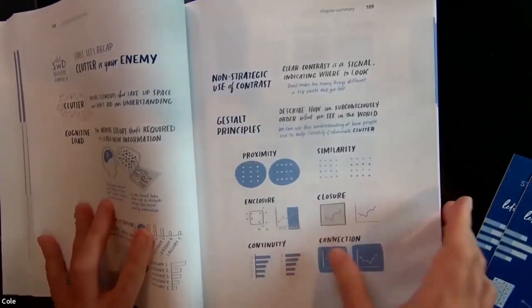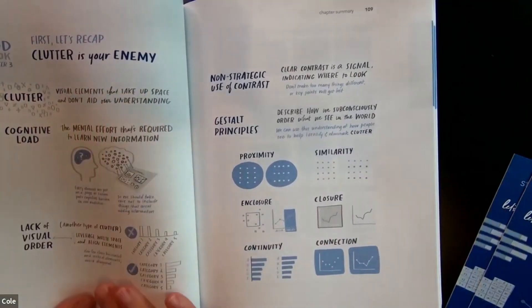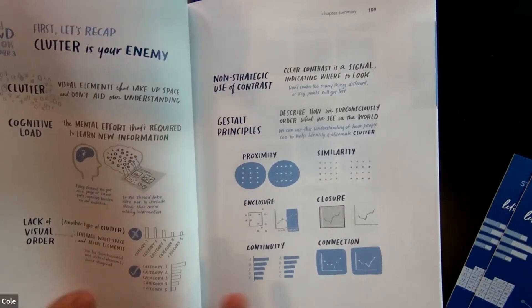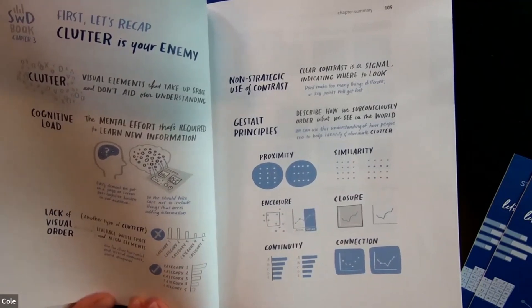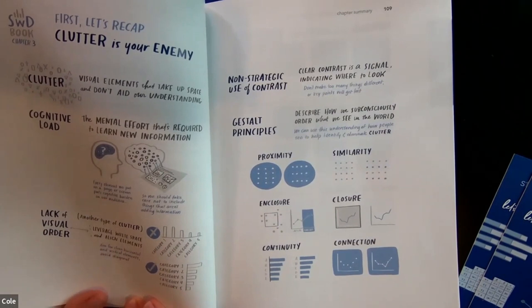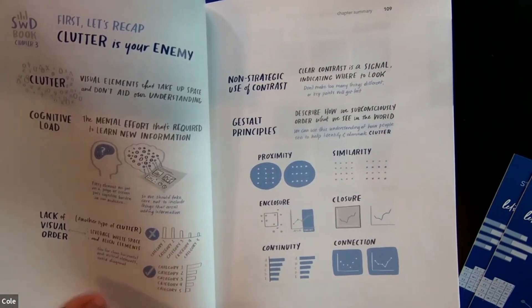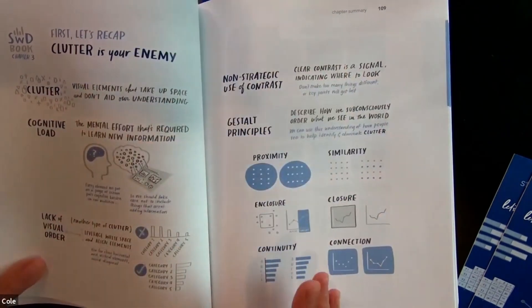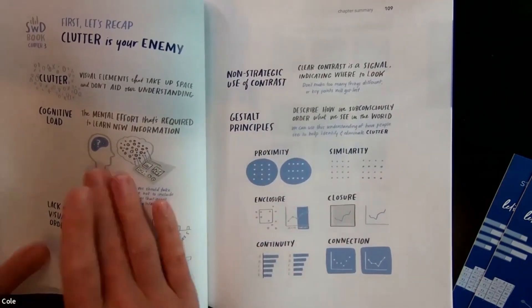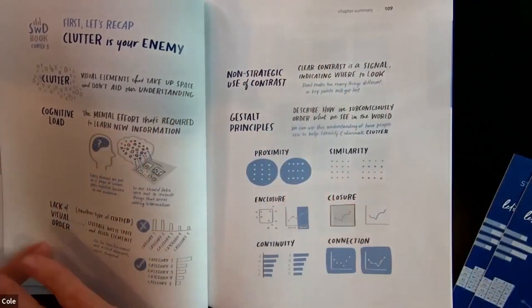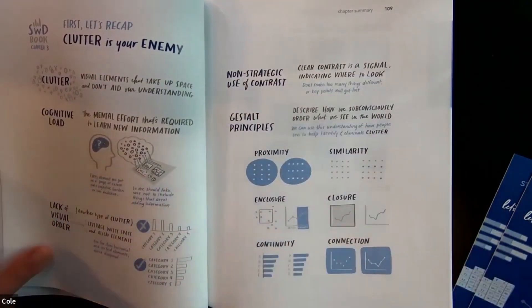First, we'll review the main lessons from Storytelling with Data chapter three. It goes into a recap covering clutter, cognitive load, and lack of visual order. One really fun thing with this book was that I partnered with Catherine Madden, an amazing illustrator who has a superpower for turning concepts into visual content. She did that for each chapter, so we have a beautifully illustrated summary. If you aren't familiar with it, the prelude plus this should give you enough to get going, or if you've read the first book, it helps get you in the right frame of mind.